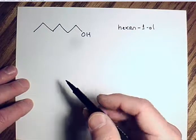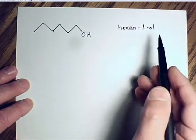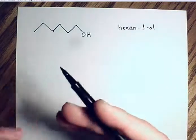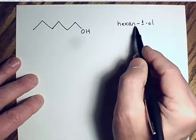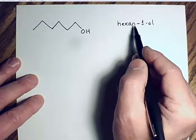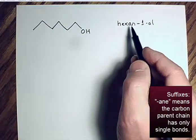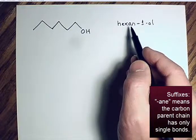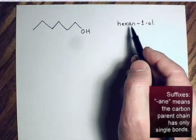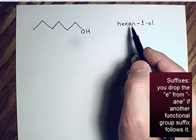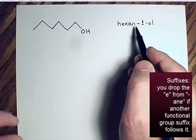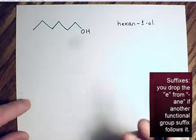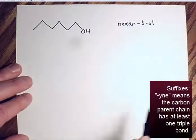When you get to college you'll name it '1-hexanol' with numbers inside the word. We drop the 'e' on 'ane' because it's no longer the end of the word — similar to how you drop the 'e' from 'have' when you say 'having.' Since it's not the end of the word, we drop the 'e.'